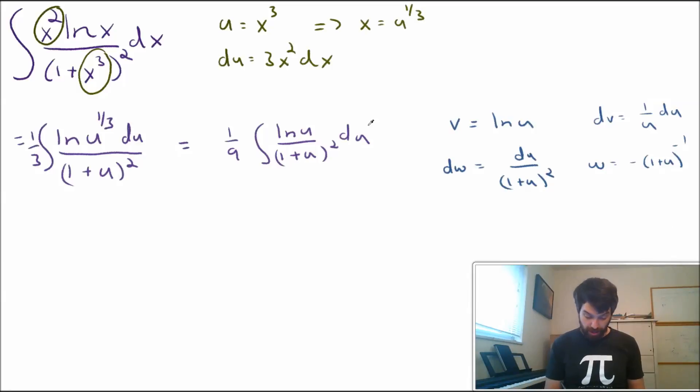So let's see how this becomes in the integration by parts formula. The 1 ninth sticks out the front. Now, I want to do v times w, so this is going to be ln of u multiplied by negative 1 plus u to the minus 1, minus, I'm going to have a negative in here, so I'm going to put a plus, two negatives makes a plus, the integral. Now, I want to do w dv. So this is going to be minus 1 over, I've got a u here, and I've also got a 1 plus u du.